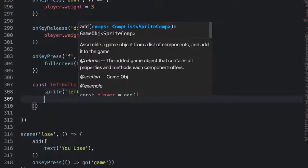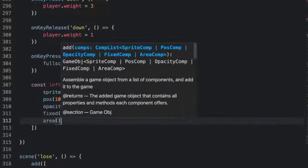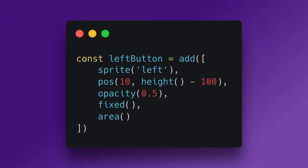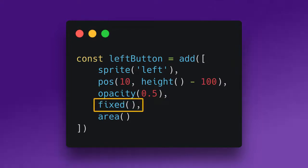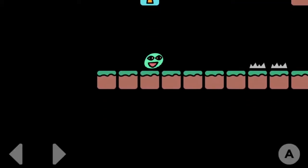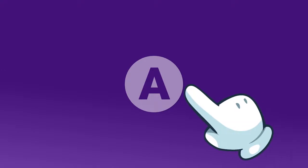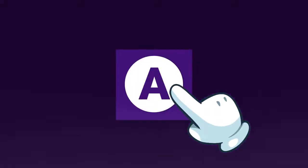Each button is made up of five components. The last two are the most interesting. Sprite and position components are for showing the button graphic and positioning it. Opacity will be used to make the button transparent when it is not active or being pressed. Fixed is used to keep the buttons in place as the camera moves around — it's useful for UI like these on-screen controls. Area is used to give us a collision box that we can use to check if a touch's position overlaps with the button.